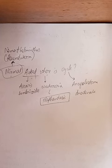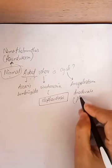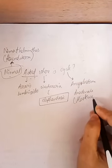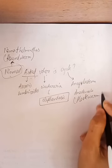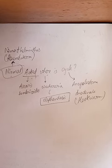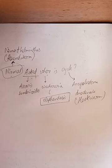Ancylostoma duodenale, whose common name is hookworm. So repeat after me — the trick is 'Nirmal Aagst Vericycle': Nirmal → Nemathelminths, Aag → Ascaris, Where → Wuchereria, Cycle → Ancylostoma. Thank you.